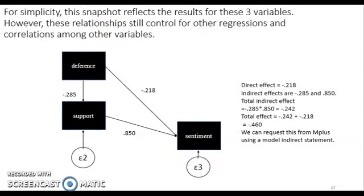So here is a snapshot that reflects the result of the three variables that have a mediated relationship. So deference has a negative effect on sentiment. So the higher the deference, the lower the positive relationship or positive attitude towards unions. The higher the deference, though, also that reduces the support for activism and labor. But the higher the support of activism and for labor, the higher this positive sentiment towards unions.